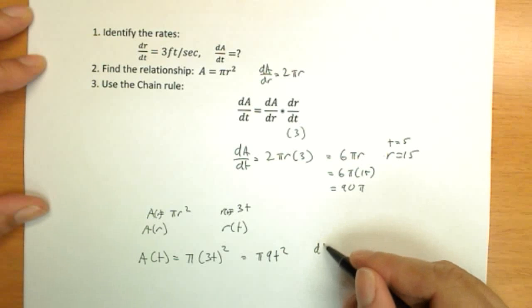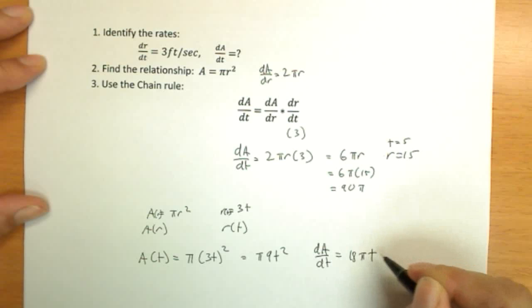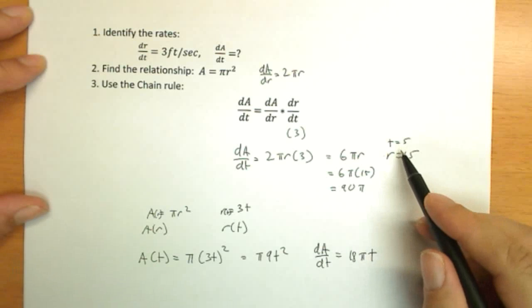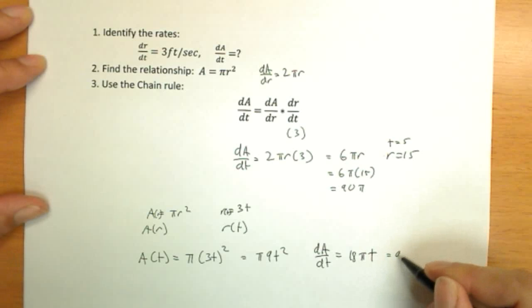And now to find dA/dt, I don't need the chain rule, I can use a simple derivative, and I get 18 pi times t. Plugging in time equals 5 seconds, I get the same answer, 90 pi.